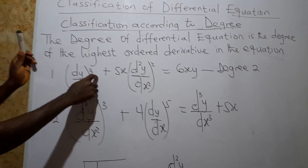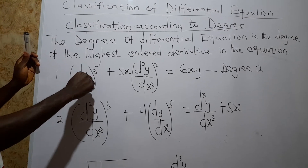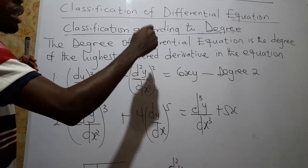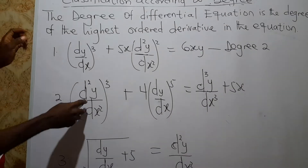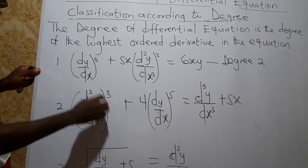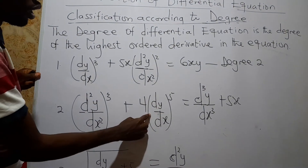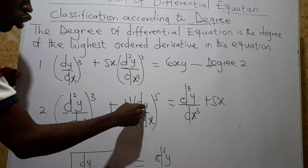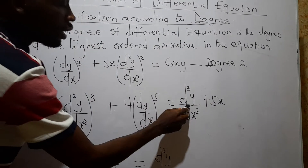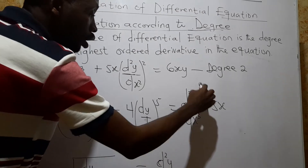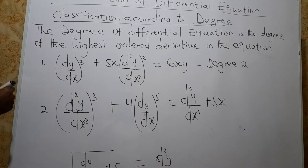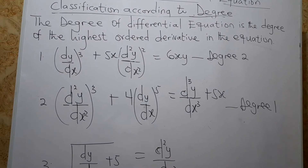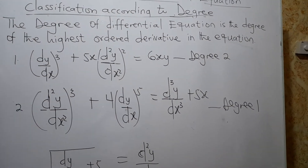Be careful: the degree is not 3, because the derivative of order 1 is not the highest order. The highest order is 2, and the degree of that highest order derivative becomes the degree of the differential equation. For the next example: the highest order is 3. What is the degree of that highest order derivative? The degree is 1. So this differential equation is of degree 1 — not 3, not 5. Find the highest order derivative, then find its degree.